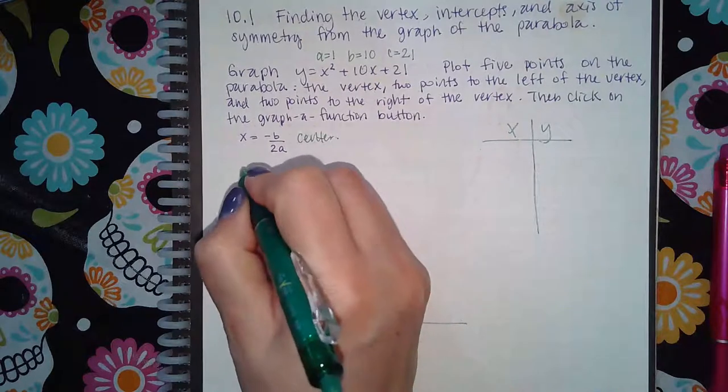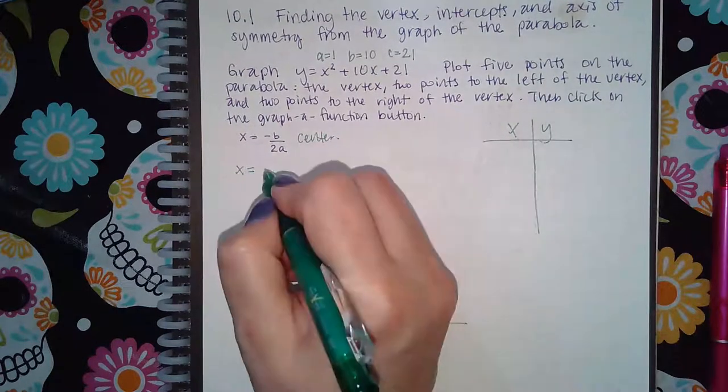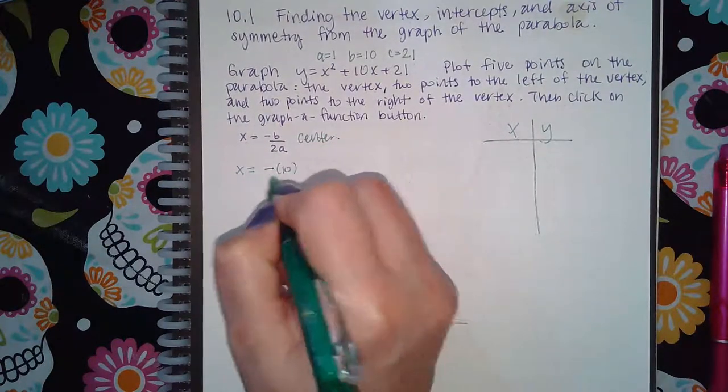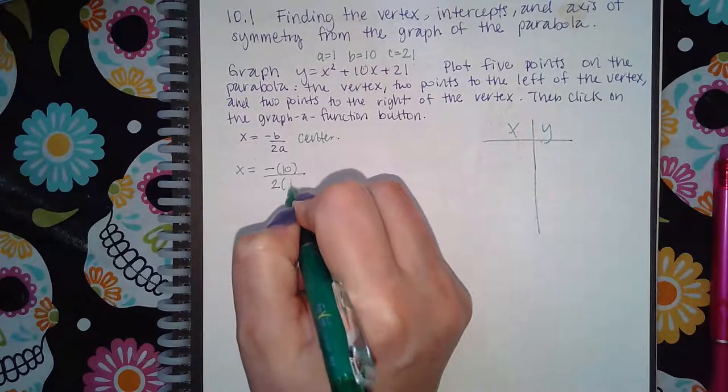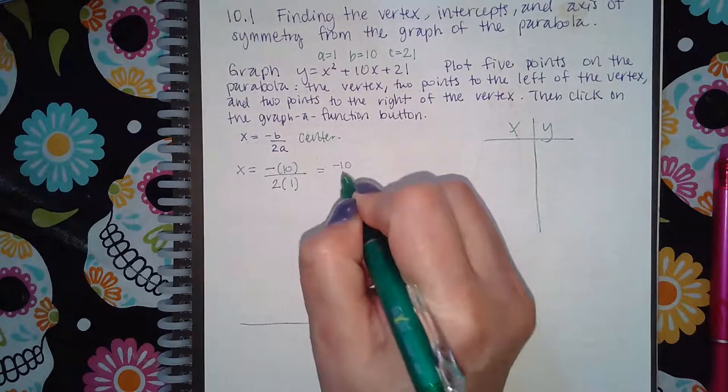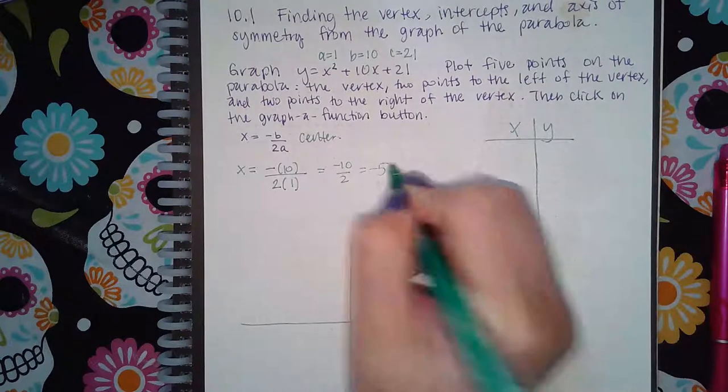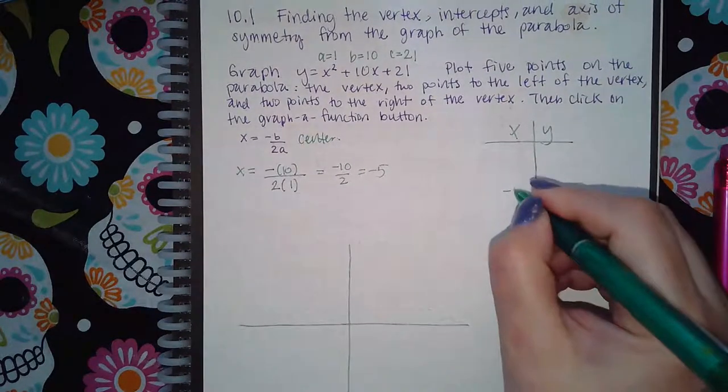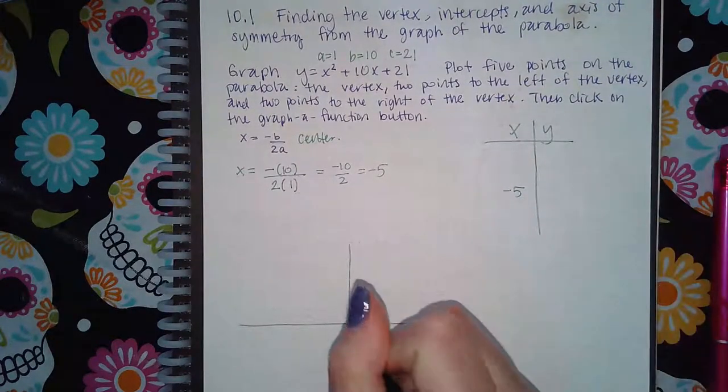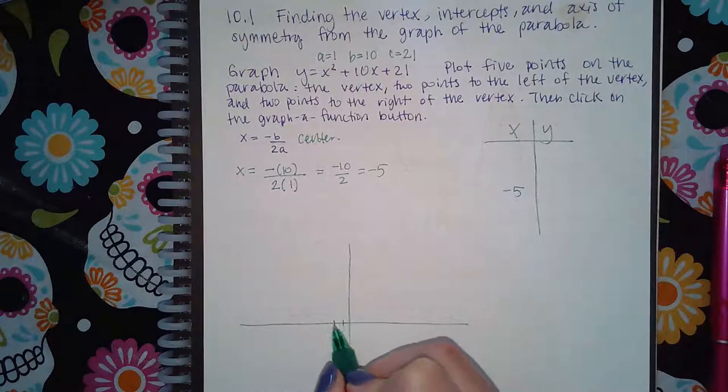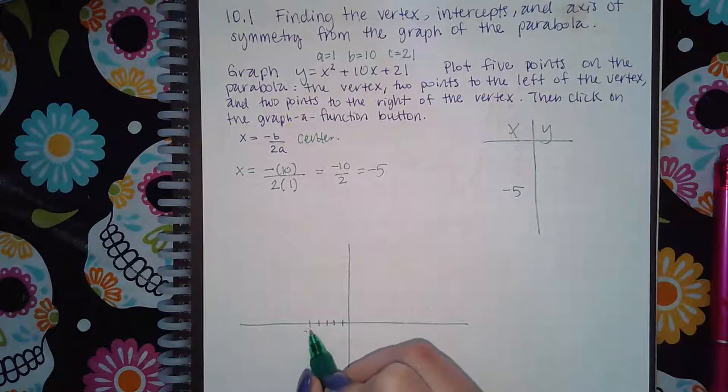In order for me to find the x value of the center, I have to do negative b over two times the a value. So I get negative 10 over 2, which is negative 5. So negative 5 is going to be my center.